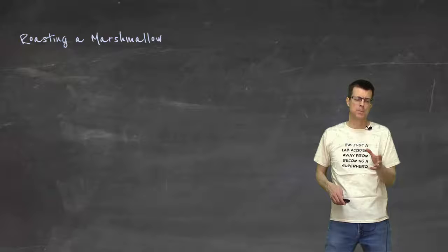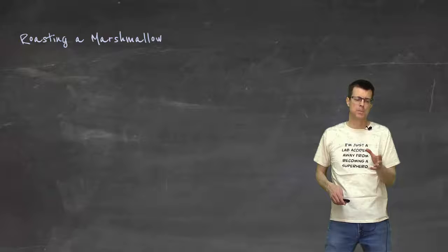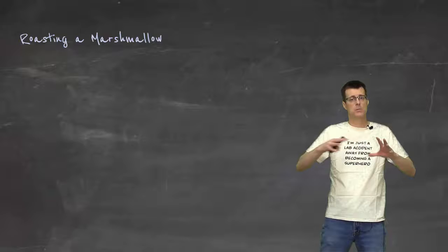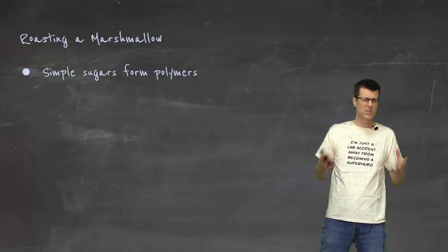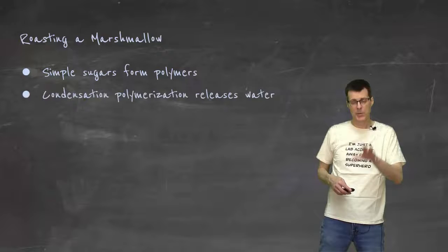When you're roasting a marshmallow, what you're doing is now instead of causing attractive forces to be disrupted and reformed, you're actually causing more of a chemical change where you're making a polymer. So you're taking these simple sugars, there's lots of those in a marshmallow, you're taking the simple sugars and you're causing them to polymerize, and that would be a condensation polymerization. If you look carefully while you're roasting a marshmallow, you can see steam coming out of it.